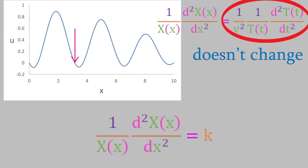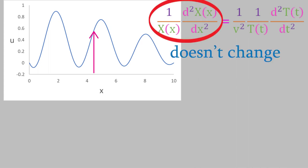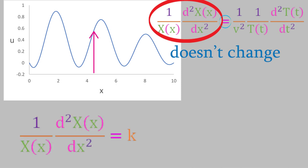Now imagine instead freezing x and running t back and forth — picking a single value of x and watching how the wave height changes over time. Since x isn't changing, the left side of the equation must be constant, because x is the only variable on that side. Since the left and right sides are equal to each other, and the right side equals k, the left side must also equal k. So now we have two equations: one containing only x and one containing only t.